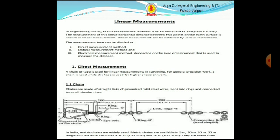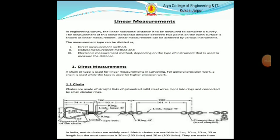Linear measurements. In engineering surveying, the linear horizontal distance is to be measured to complete a surveying. The measurement of this linear horizontal distance between two points on the earth's surface is known as linear measurement. Linear measurement can be achieved by various instruments. The measurement type can be divided as direct measurement method and optical measurement method, depending on the type of instrument used. Direct measurement: a chain or tape is used for linear measurement in surveying. For general precision work, a chain is used while the tape is used for higher precision work.